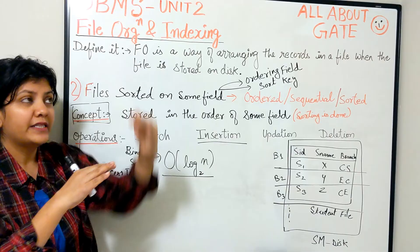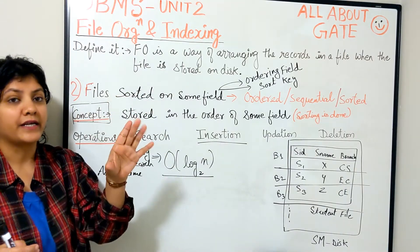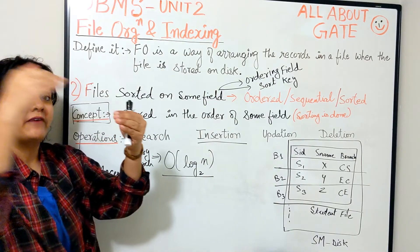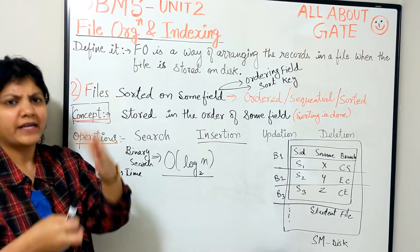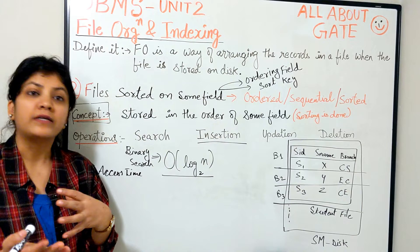So whenever a new record comes, you have to find out its fixed position in the sorted file where it fits and there you have to go and insert it. For that you might have to shift the further more blocks or you might have to attach a new empty block by the linked list. So that's a detailed part.